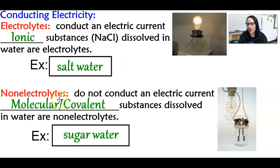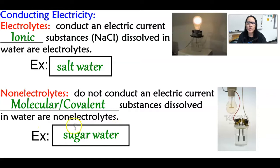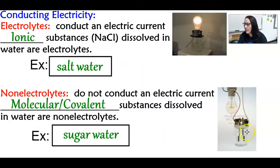A non-electrolyte is a solution that does not conduct an electric current. If you have a molecular or covalent compound — the opposite of ionic — the substances dissolved in water will not conduct electricity. So sugar water: sugar is covalent or molecular, and you'll notice it does not light the light bulb, which makes it a non-electrolyte.